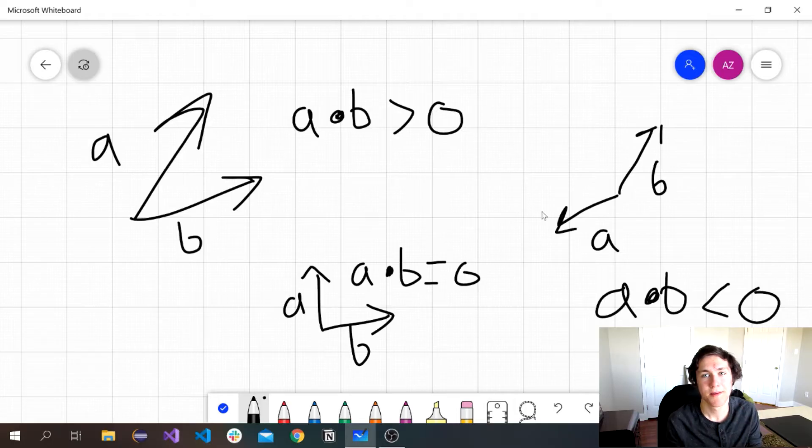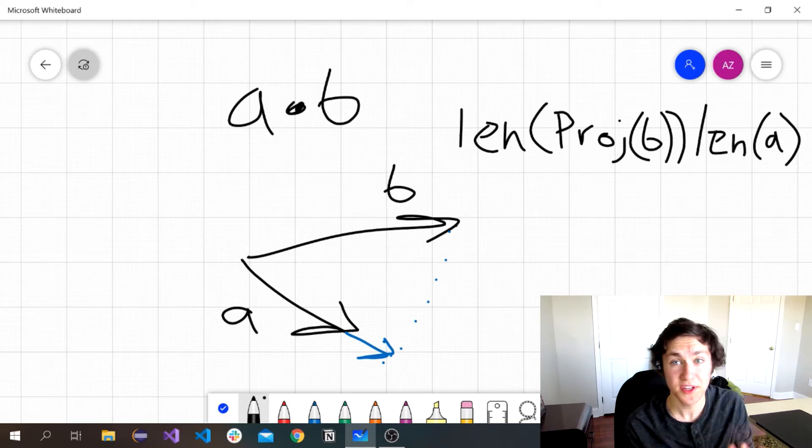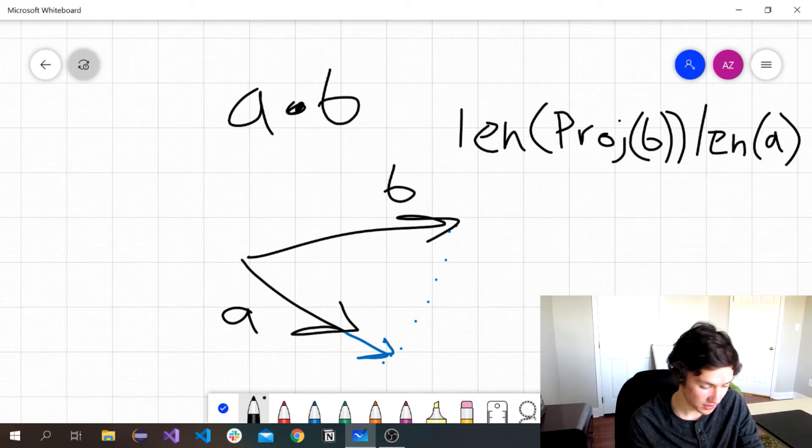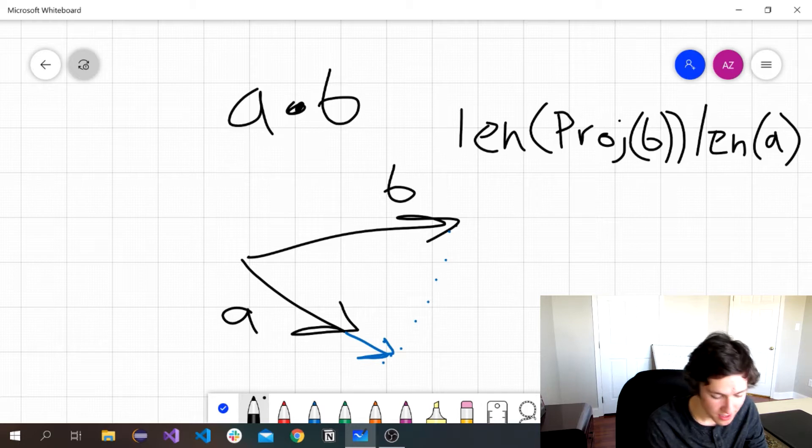They're what's known as probably part of the standard basis that you set for this space. You can also think of the dot product as projecting one vector onto the span of another vector, say b onto a, and then finding its length, which in this case is going to be the blue.